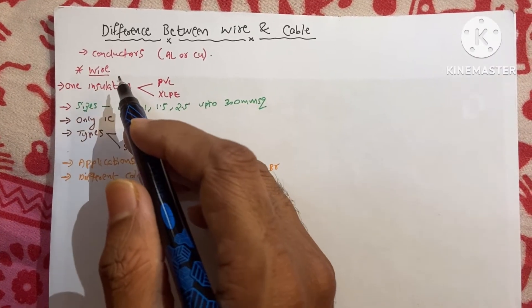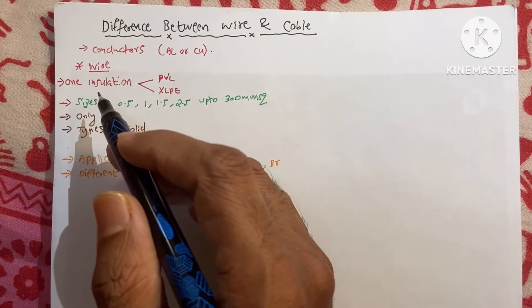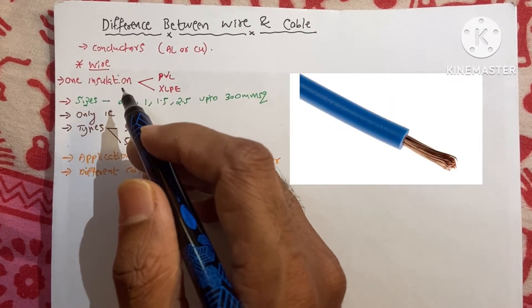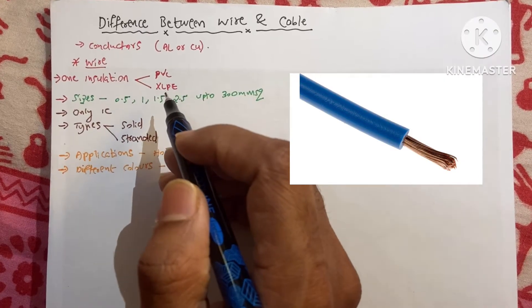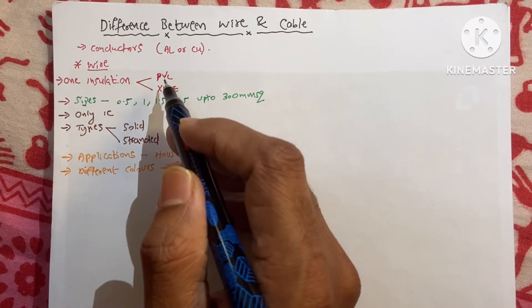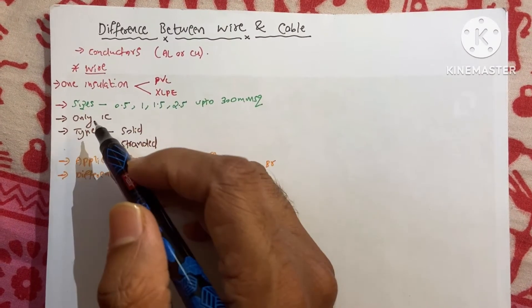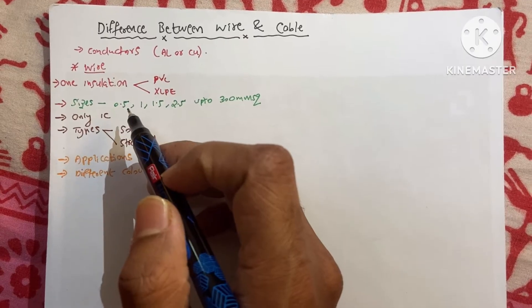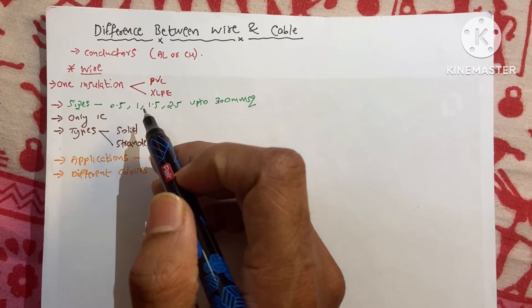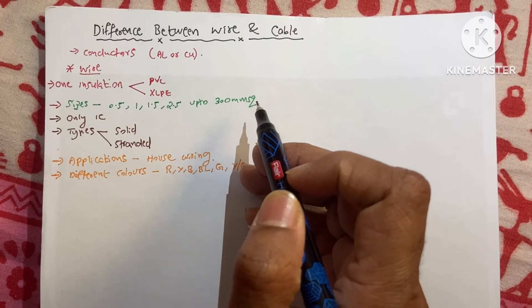First I am talking about wire. The wire is such a material which has only one insulation. The insulation is made up with PVC or XLPE, polyvinyl chloride or cross-linked polyethylene. The different sizes of the wire are 0.5 mm square, 1 mm square and up to 300 mm square is available in the market.